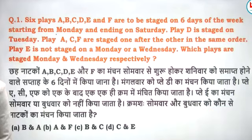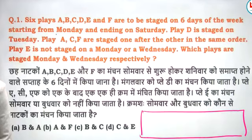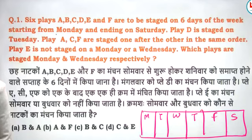Okay, so we have to write the table: Sunday, Monday, Tuesday, Wednesday, Thursday, Friday, Saturday. D is on Tuesday, so D is placed on Tuesday. And A, C and F go one after the other — A, C and F one after the other.